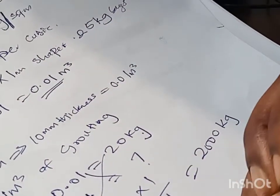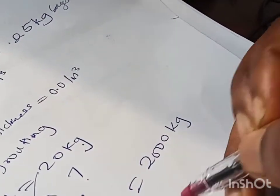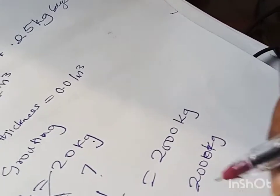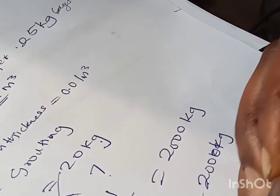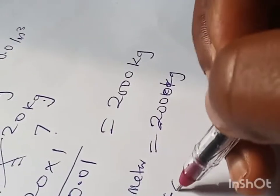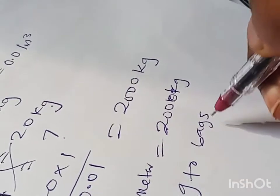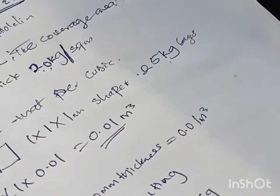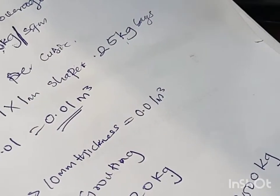For one cubic meter, we're going to be needing 2000 kg, and we're going to convert this 2000 kg to bags. We know that Sika 212 comes in 25 kg bags. So to get the number of bags that we're to buy, we're going to be dividing the 2000 kg by 25, which will give us 80 bags.